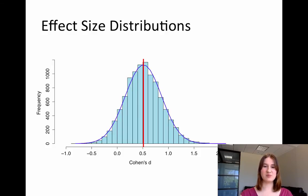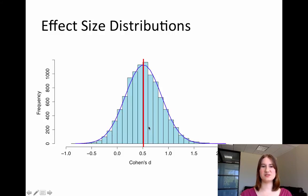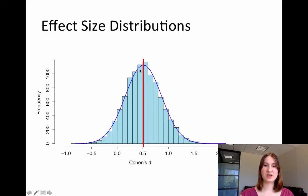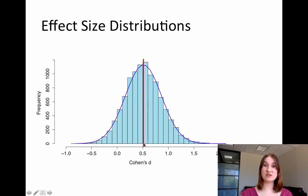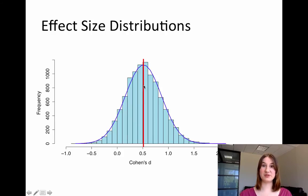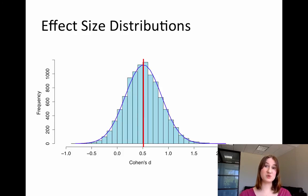You'll notice a couple of things. The light blue bars show the frequency of each different effect size. This was done by running 10,000 simulations from a population with a true effect size of 0.5. These create a nice normal curve, and the mean of that distribution is centered right at the true population effect size of 0.5 — this is basically what the sampling distribution for a particular Cohen's d looks like.